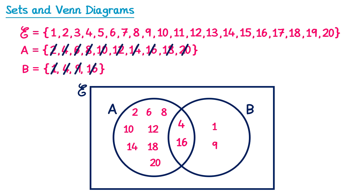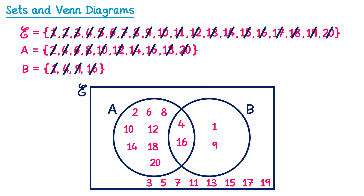Now we check for any remaining numbers in the universal set that haven't been used. We've used 1, 2, 4, 6, 8, 9, 10, 12, 14, 16, 18, and 20. The remaining numbers — 3, 5, 7, 11, 13, 15, 17, and 19 — go outside the circles but still inside the rectangle. That gives us the completed Venn diagram.